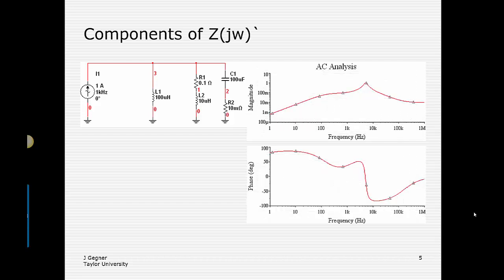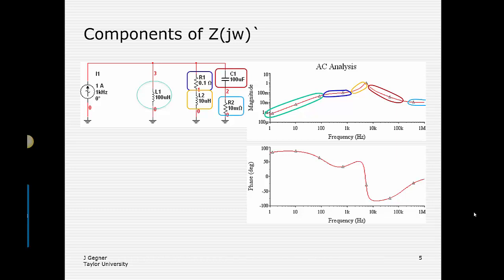Here is a plot from SPICE of the actual impedance. It's not nice straight lines — it has curves because there are no abrupt break points. Nevertheless, we can identify different regions where different elements dominate. At low frequency with a rising slope, L1 dominates. When it flattens out, R1 dominates. When it rises again, L2's impedance overtakes R1's 0.1 ohms. At higher frequency, the falling impedance of C1 competes with the rising L2 impedance, causing impedance to fall. Ultimately it flattens out due to the 10 milliohm R2.